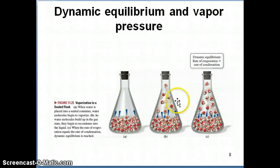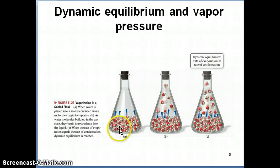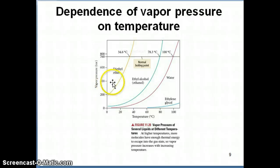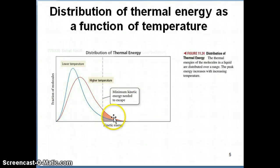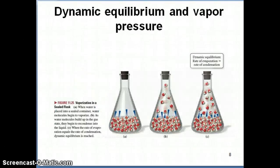Vapor pressure is not a phenomenon just for water. Any liquid will have a certain vapor pressure associated with it, because every liquid has a certain amount of intermolecular forces present. Given the temperature and pressure of that liquid, some of those molecules can escape the intermolecular forces and become gases. The vapor pressure of a liquid depends on temperature, and that should make sense — if the temperature of the liquid is higher, then more molecules will have enough kinetic energy to escape the intermolecular forces and become vapor. As a result, if you have more particles in the gas state, your vapor pressure will be higher.